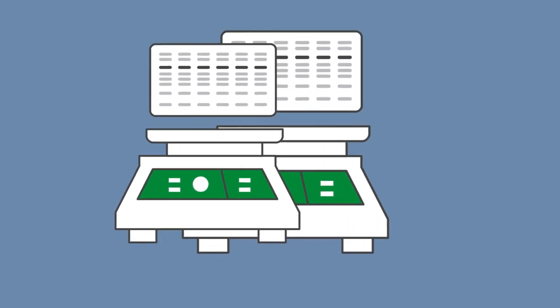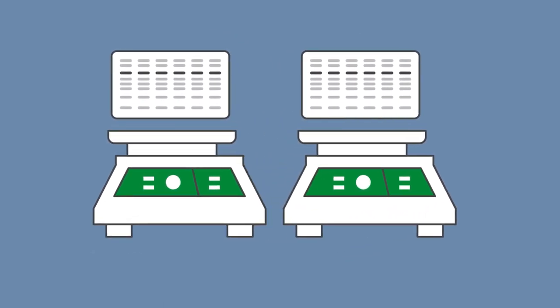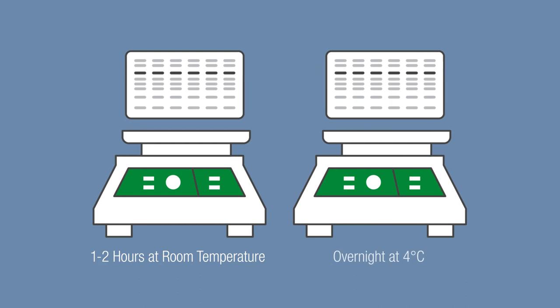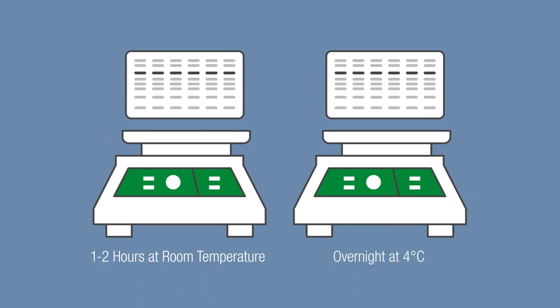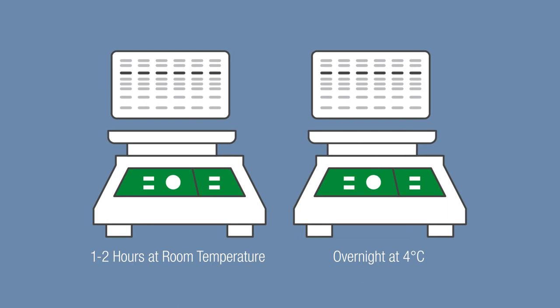The typical recommendation for primary antibody incubation is 1 to 2 hours at room temperature or overnight at 4 degrees Celsius. The optimal choice depends on your antibody and sample.